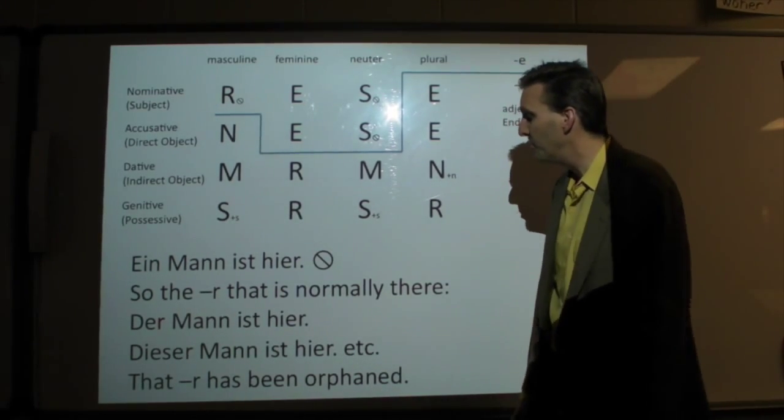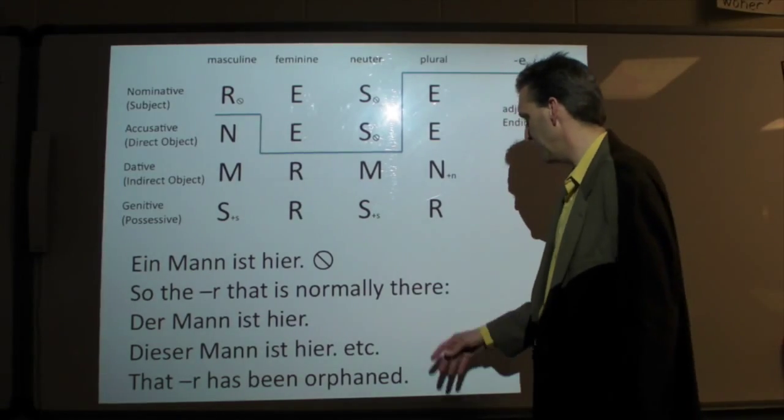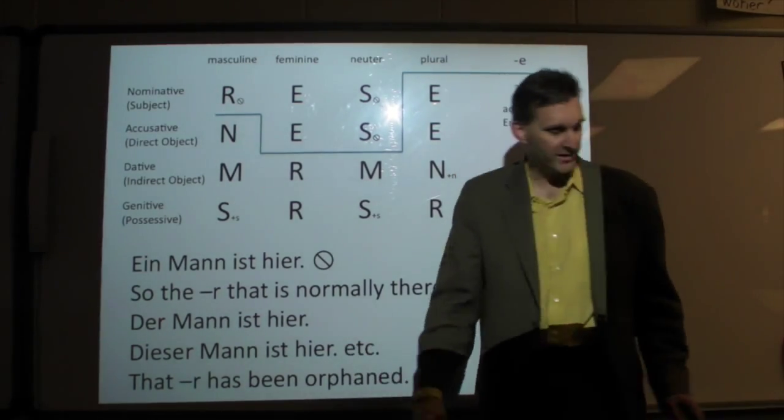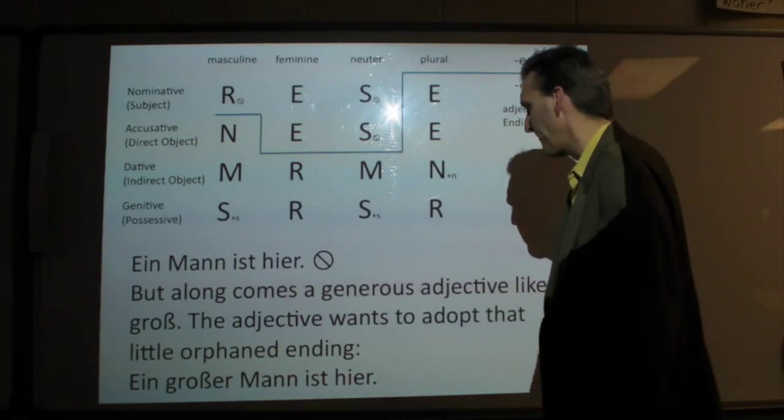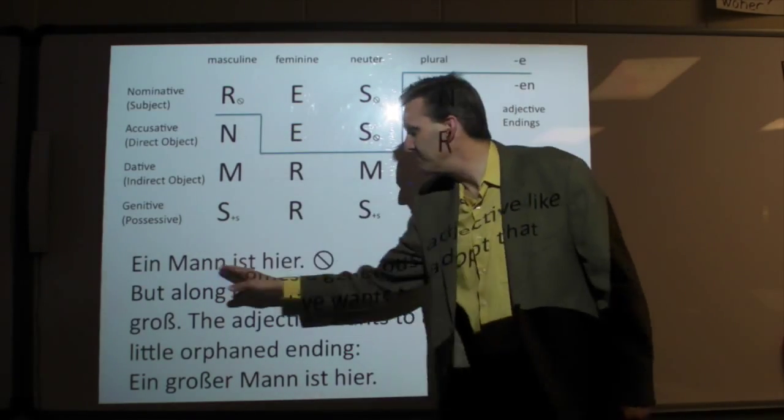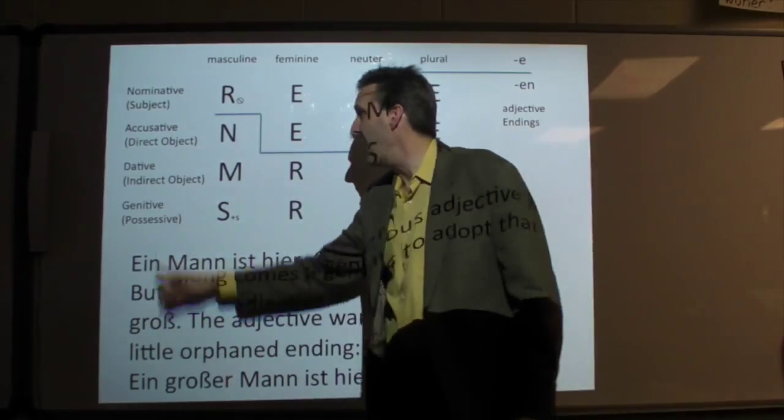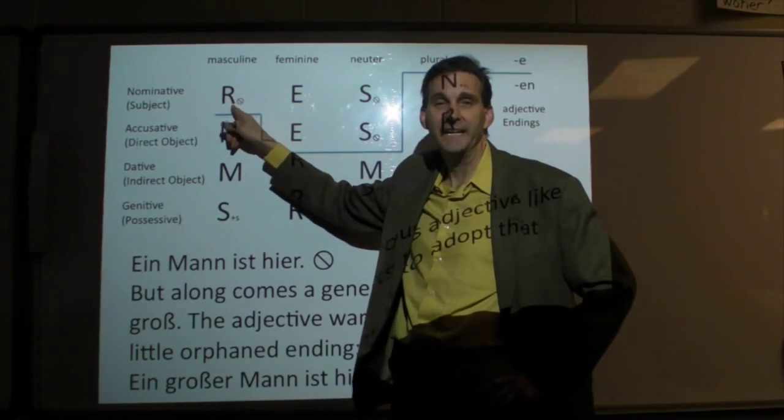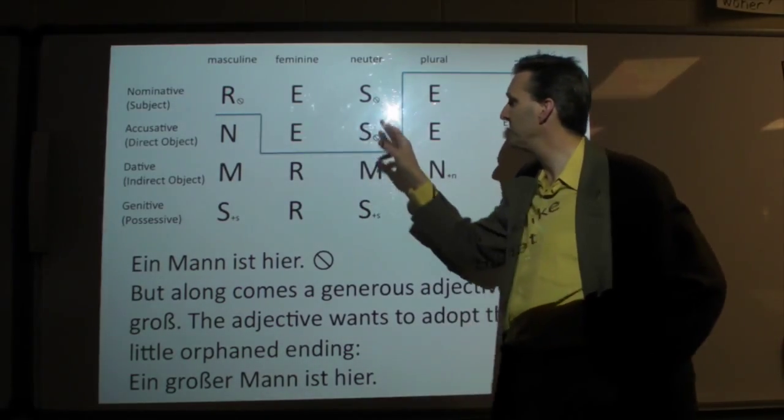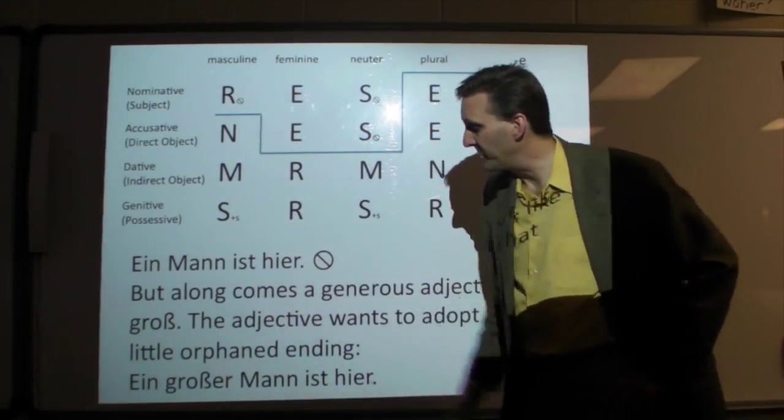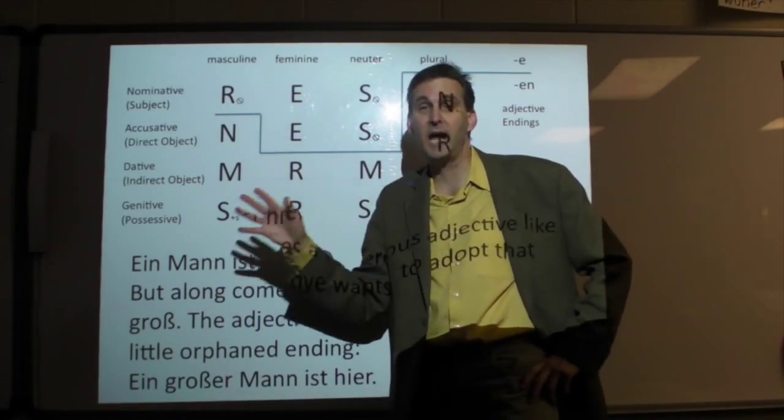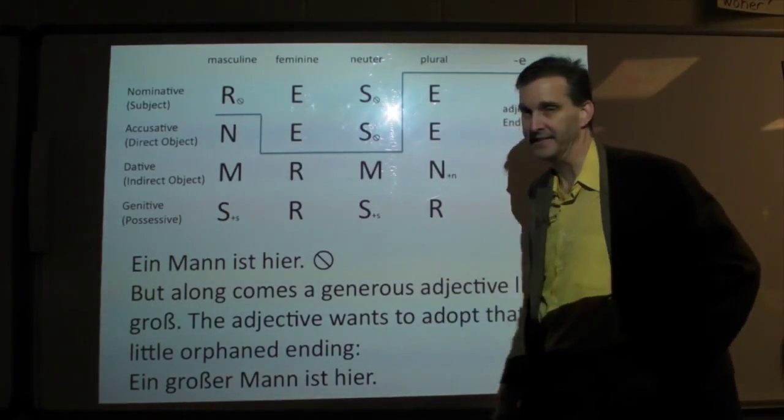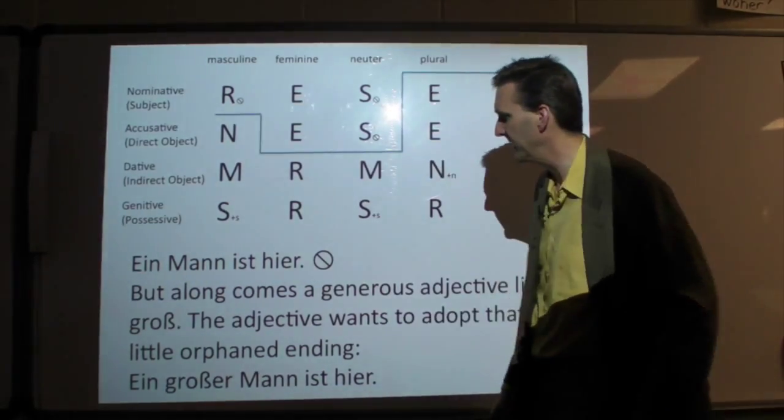So if we put in an adjective, the R that was normally there with Der Mann ist hier was a bit orphaned. So, I've orphaned it with Ein Mann ist hier. Now I want to put a big man is here. That word big, that adjective, wants to adopt any orphaned endings. If we've orphaned one of these three endings, and if we have an adjective, that adjective will adopt it, rather than follow the crooked line rule. Isn't that a sweet story? And you thought Germans were cruel.